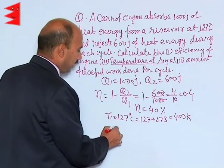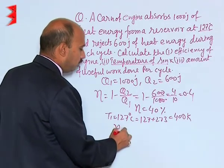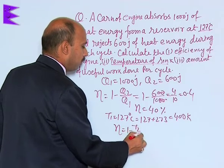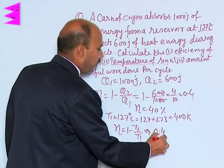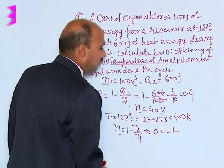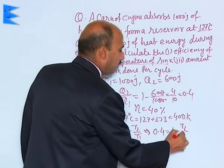Now we have to calculate temperature. We can write this formula again: 1 minus T2 upon T1. Eta is given to you, so we can write 0.4 equals 1 minus T2 upon 400.